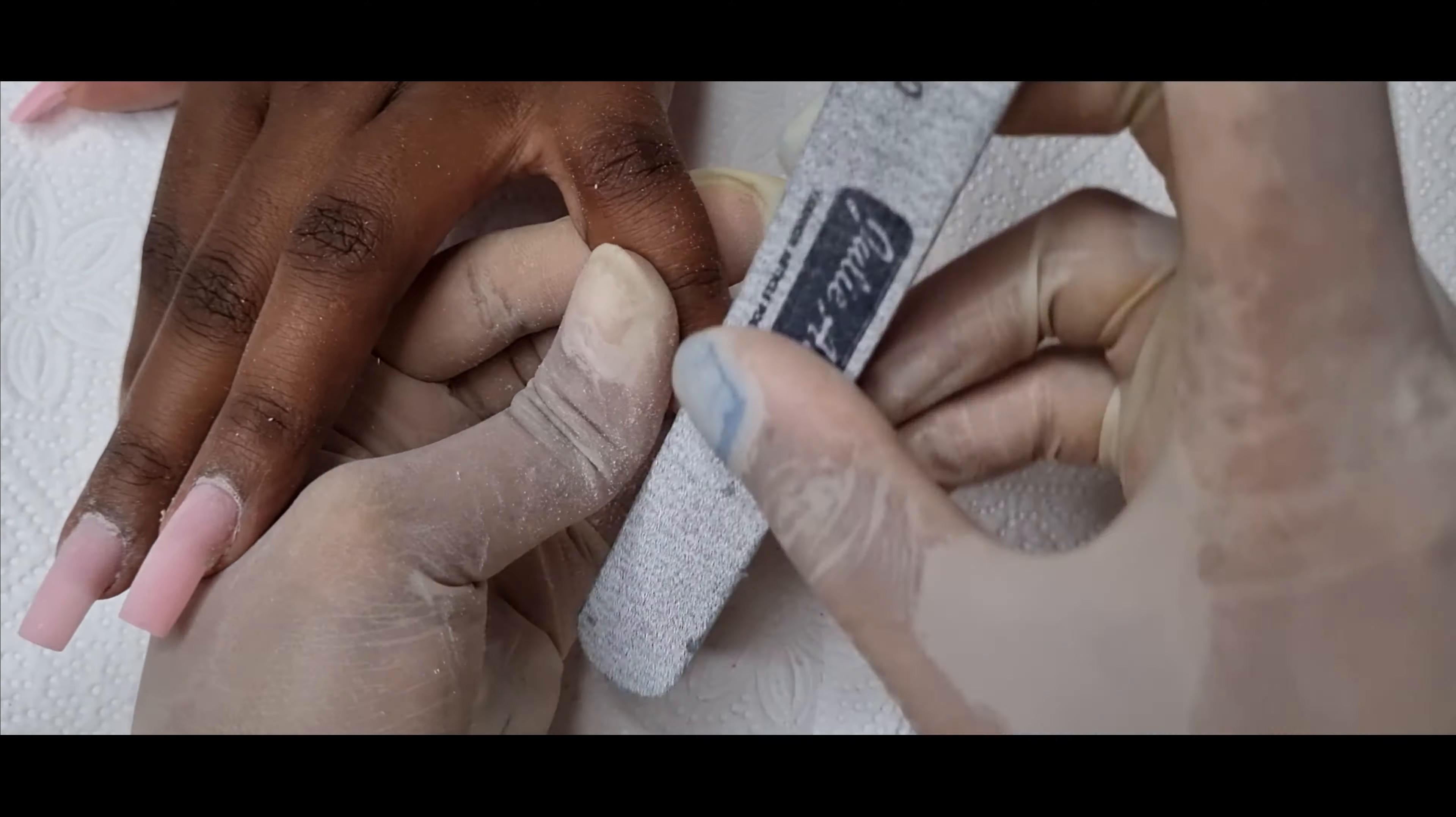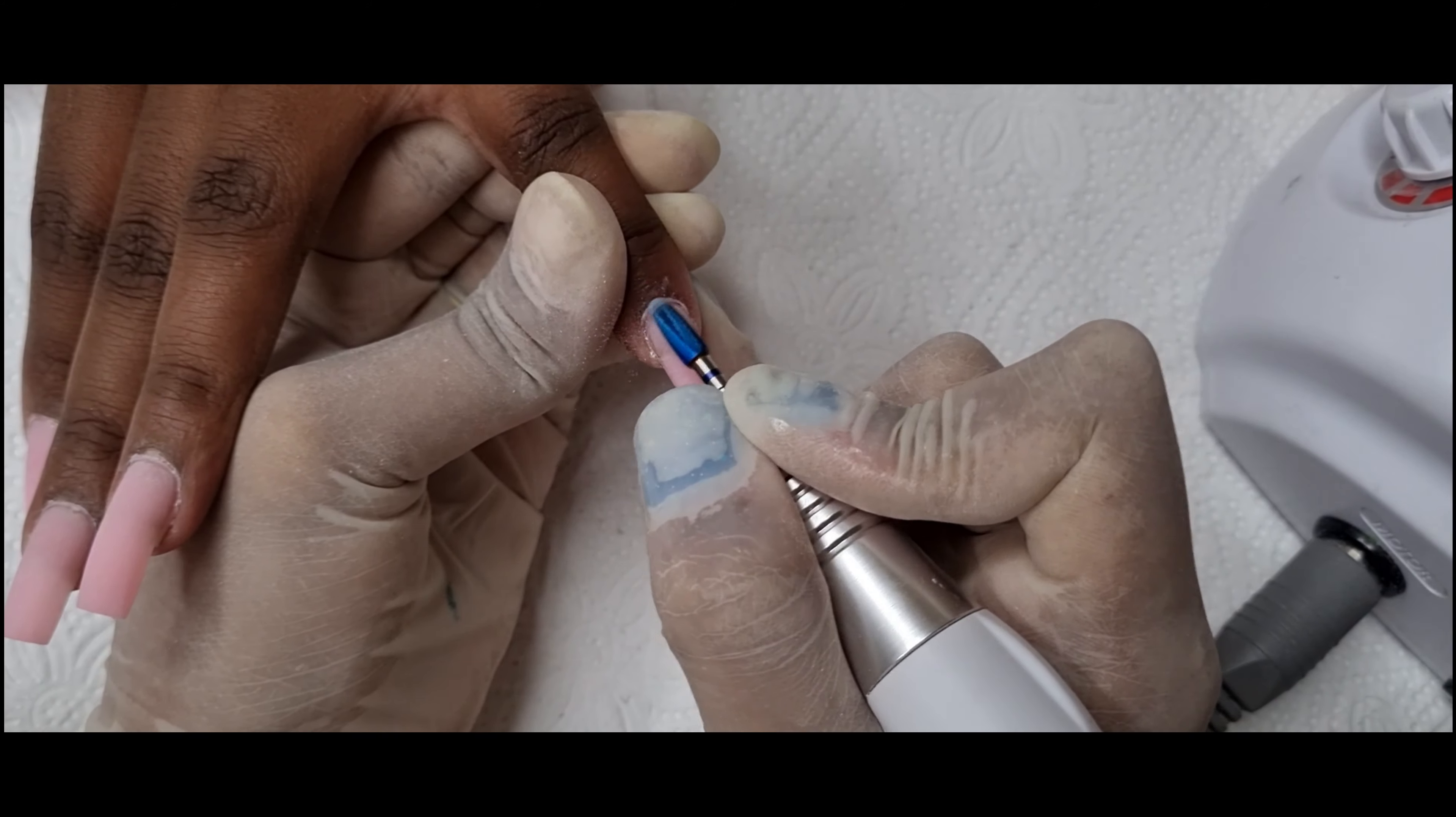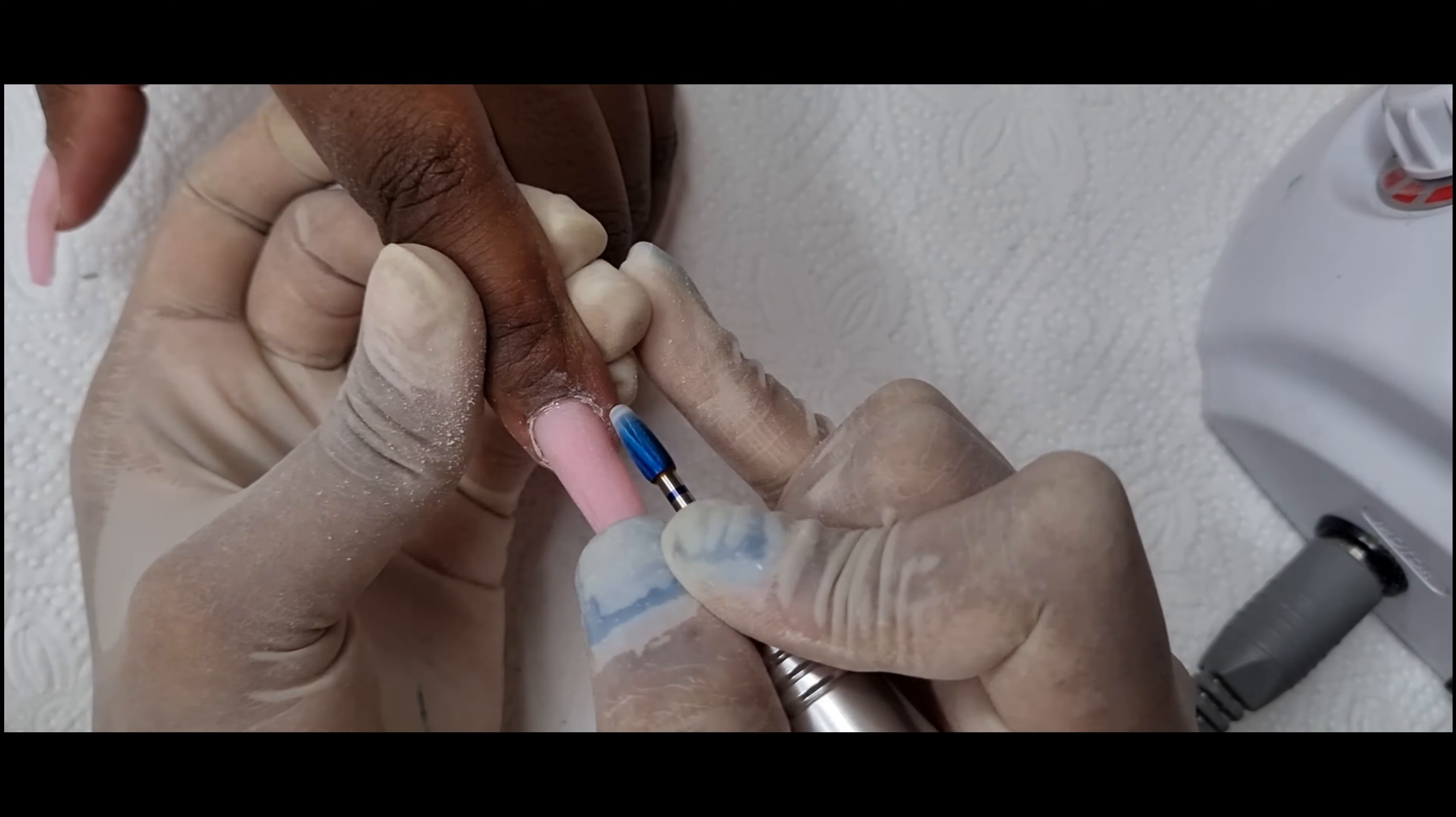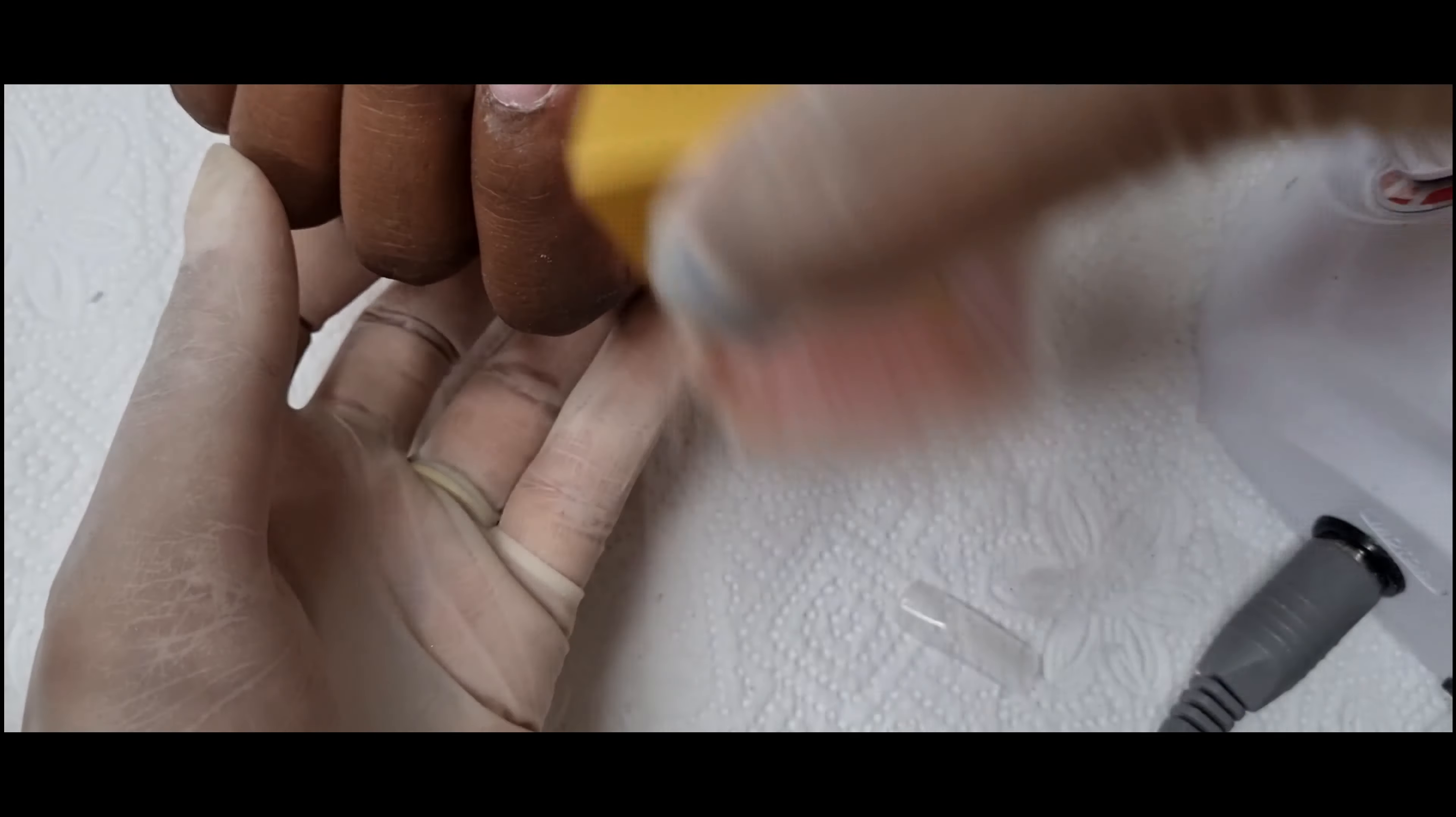Once I'm done buffing and shaping I will go in again with my nail drill just to have nice crisp cuticles and to just file off any poly gel that might have squeezed out into the cuticles.